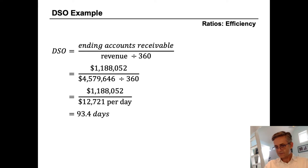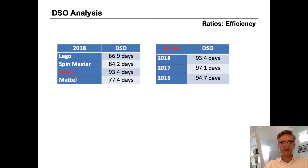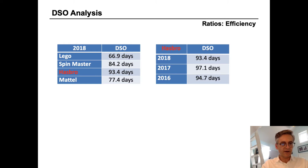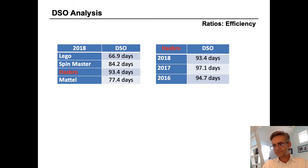So we'll compare Hasbro now to its peers in the same line of business. Looking at the chart on the left-hand side, we can see that Hasbro's 93 days is actually the longest in the industry — it takes Hasbro longer to collect from its customers than anyone else. Keep in mind that Lego, SpinMaster, and Mattel all sell to effectively the same customers: Walmart, Target, and Amazon in the United States.